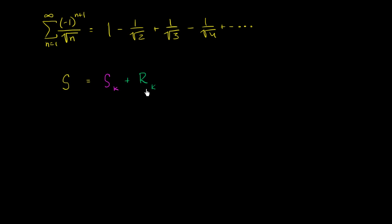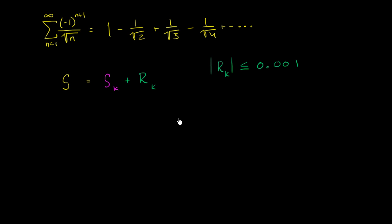The remainder starts with the k plus first term. What I want to figure out is: what's the minimum number of terms — what's the minimum k — so that the absolute value of the remainder is less than or equal to 0.001? I encourage you to pause the video and see if you can figure this out.